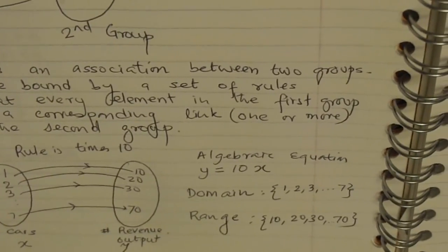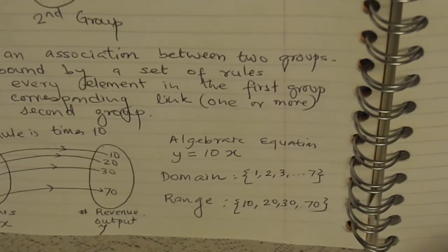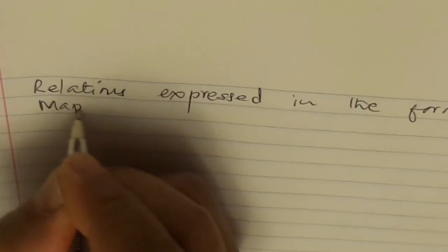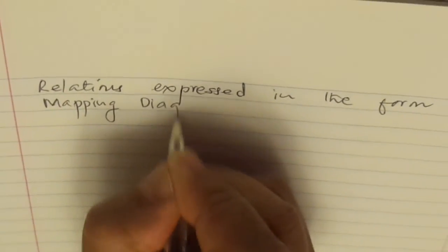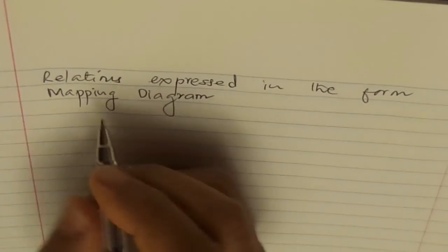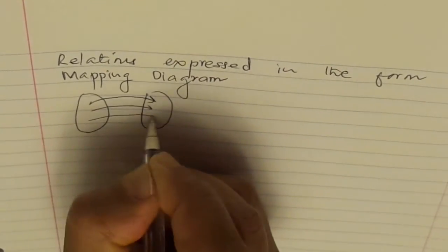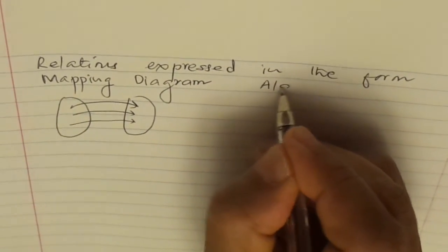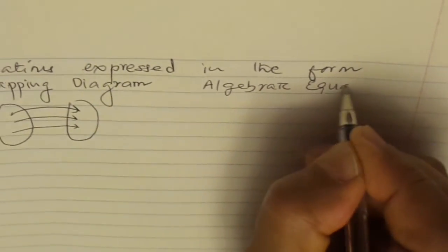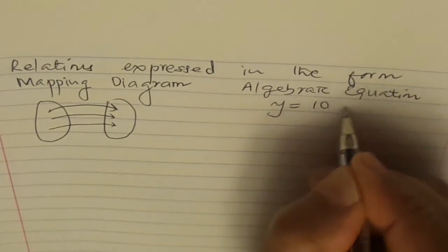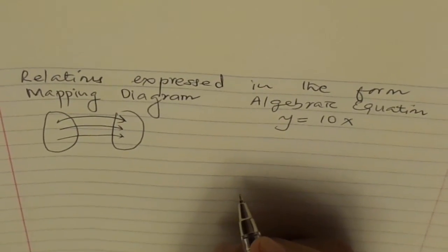There are many other ways to represent these relations. We have already seen a few — relations expressed in the form of a mapping diagram, and then we have the algebraic equation. In this case, the equation y = 10x expresses the revenue from car wash for Sam.